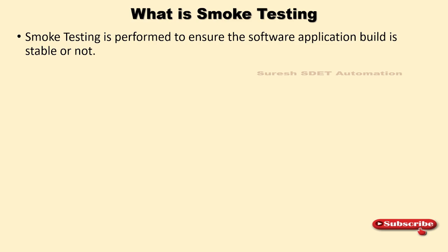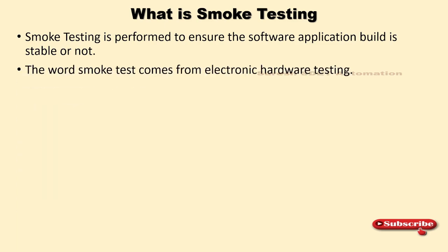We perform this test to ensure whether the build is stable or not. If it is stable, we can proceed with further testing; if it is not stable, we immediately revert to our developers. The word 'smoke testing' comes from electronic hardware testing — for example, a circuit board where you connect all the circuits, switch the power on, and check whether smoke comes out or whether it is working correctly. If you see smoke, you immediately switch the power off.